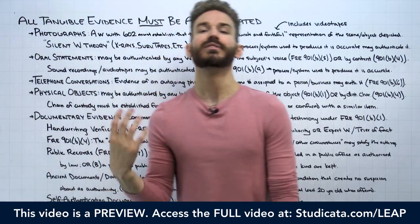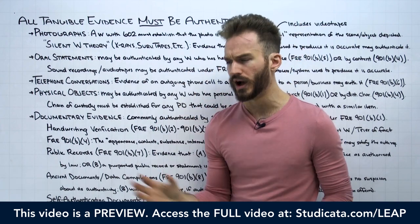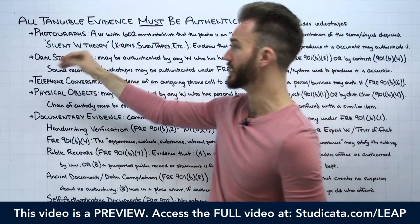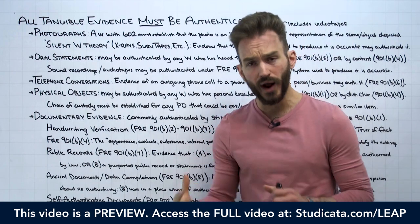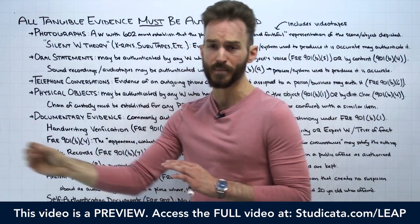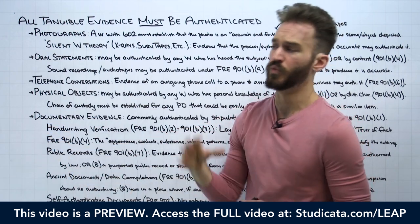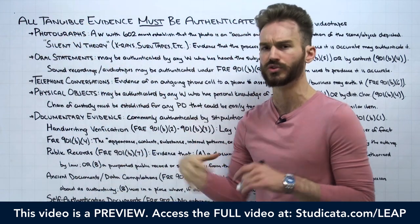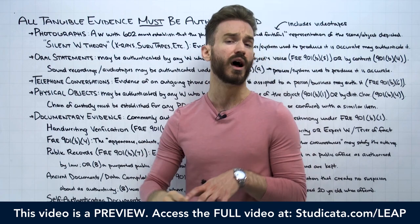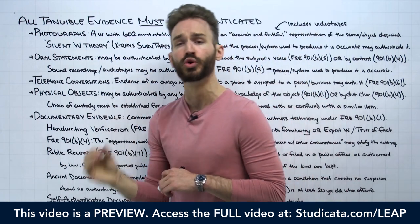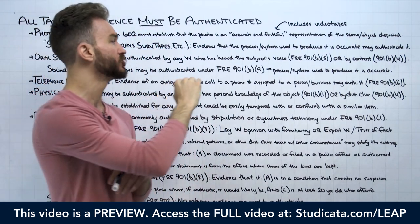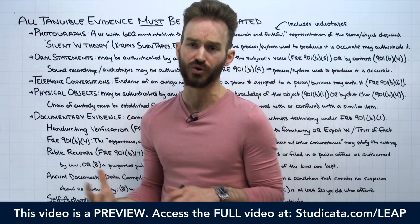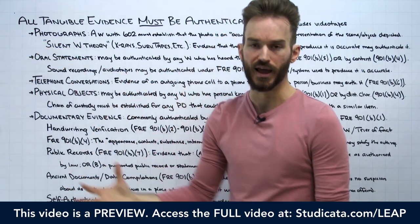With an x-ray, you would just need a technician to come in and say, 'The process and system we used to take this x-ray was accurate and reliable.' Boom — now we've authenticated the x-ray under Rule 901b9. So for photographs: if we have a witness with firsthand knowledge who can say this is the scene and it's an accurate representation, that's great. If it's a surveillance tape or x-ray without a firsthand witness, silent witness theory under Rule 901b9 applies — show that the process or system used to produce the image was accurate.